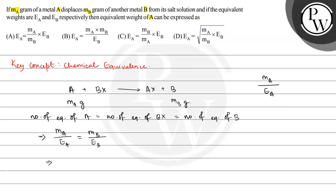If we isolate Ea, then Ea equals (ma/mb) × Eb. This is the expression for equivalent weight of A, which is correctly given in option A.